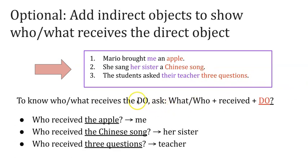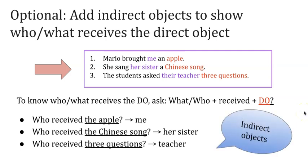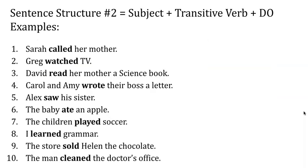To find the indirect object, ask 'Who or what received?' and then use the direct object from the sentence. For example: 'Who received the apple?' — 'Me'; 'me' is the indirect object. 'Who received the Chinese song?' — Her sister. 'Who received the three questions?' — The teacher. On this page you can see 10 different examples using the structure subject plus transitive verb plus direct object. Pause the video here to study the examples and pay attention to the verb and the direct object after.